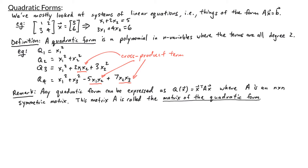One thing to note is that any quadratic form can be expressed as q(x) equals x transpose times A times x, where A is an n by n symmetric matrix. This matrix A is called the matrix of the quadratic form. Let's look at some examples.